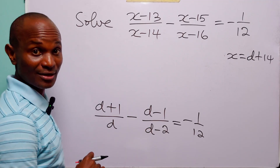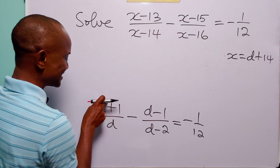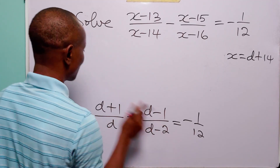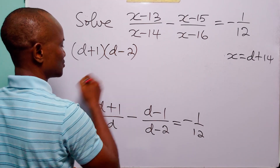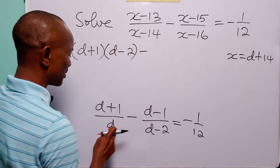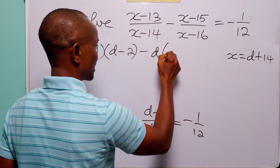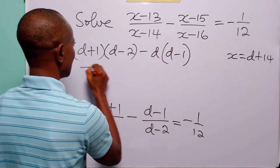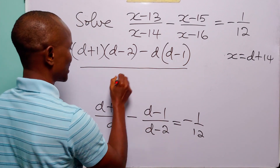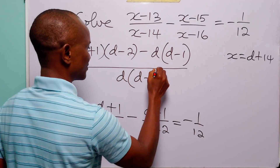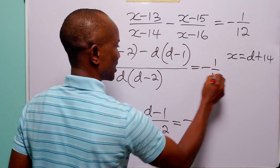At this point we can combine these two fractions into one single unit. We multiply the first numerator by the second denominator to get d plus 1 multiplied by d minus 2, minus the second denominator times the first numerator giving d times d minus 1, all divided by d times d minus 2, and everything is still equal to minus 1 over 12.